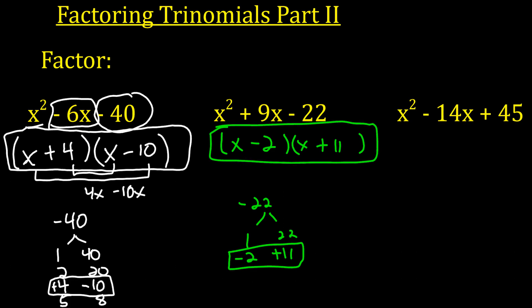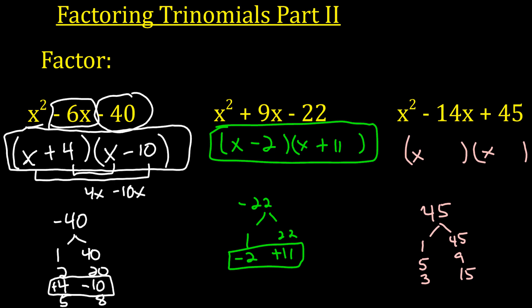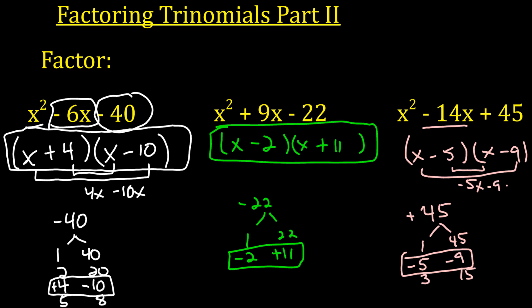Last one. We know it's going to be x and x. We're looking at the factors of 45: 1 and 45, 5 and 9, 3 and 15. We know it has to multiply to positive 45 but add to negative 14. So we're going to have negative 5 and negative 9. When we do negative 5 times negative 9, we get positive 45. When we add negative 5x and negative 9x, we get negative 14x.